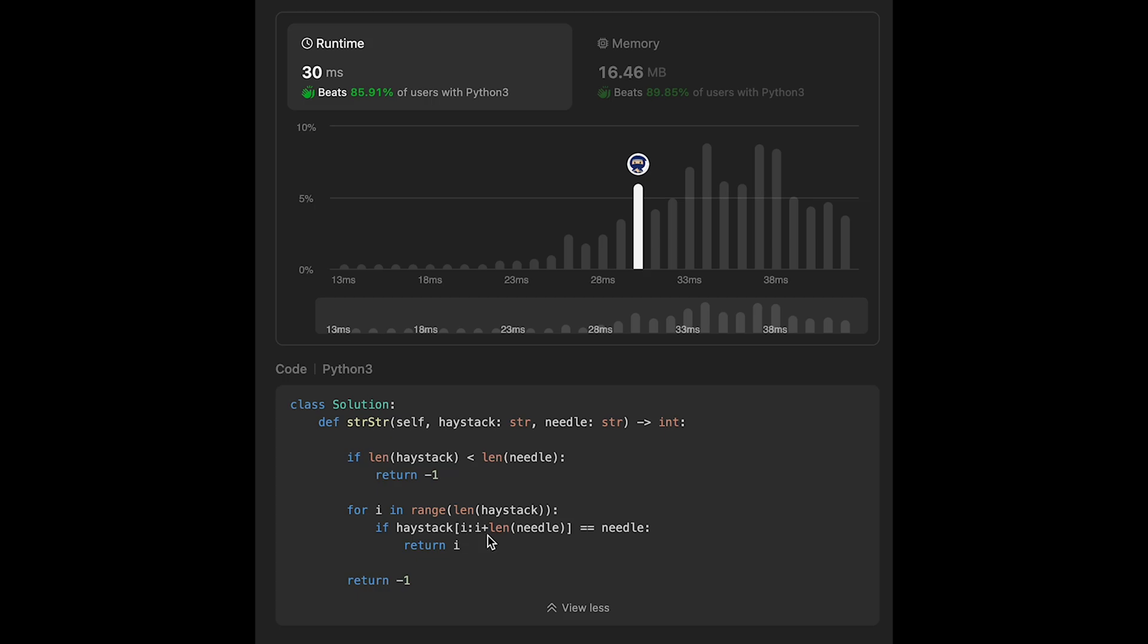So we have a slicing cost which is the length of needle. That's why time complexity is n × m. The space complexity is O(1) because we don't use extra data structures.